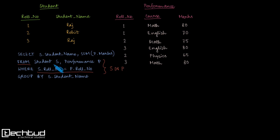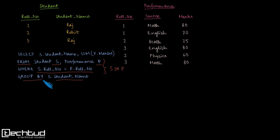This is a simple aliasing of the tables: the Student table is renamed as S and Performance is renamed as P for this particular query. What we are also doing here is grouping the data by student name. The interesting thing is we are not grouping by roll number, which is actually the primary key.